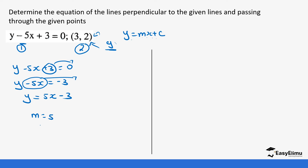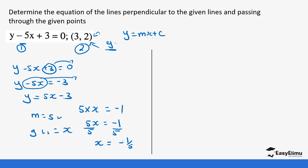If the gradient of the first line is 5 and the gradient of the second line is x (unknown), then 5 times x must equal negative one. So 5x equals negative one; dividing both sides by 5 gives x equals negative one-fifth. That is how we use the gradient of one line to find the gradient of the perpendicular line. Now we have the gradient of the second line and a point, so we can form its equation.